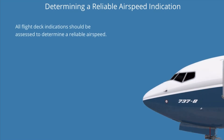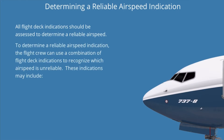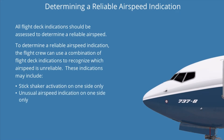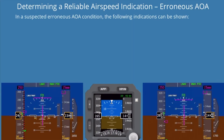All flight deck indications should be assessed to determine a reliable airspeed. To determine a reliable airspeed indication, the flight crew can use a combination of flight deck indications to recognize which airspeed is unreliable. These indications may include stick shaker activation on one side only, unusual airspeed indication on one side only, pitch limit indicator (PLI) on one side only, and erroneous minimum or maximum speed bars.